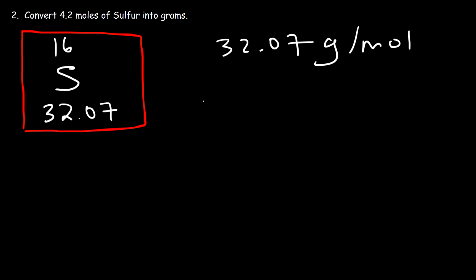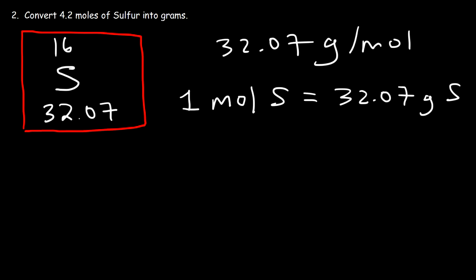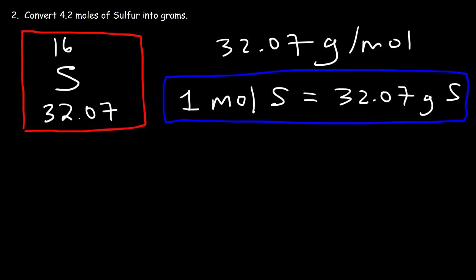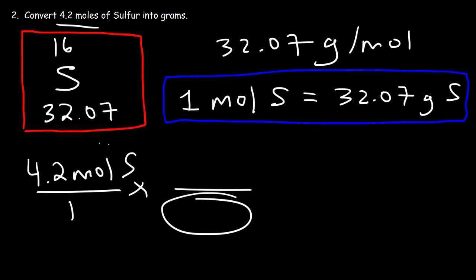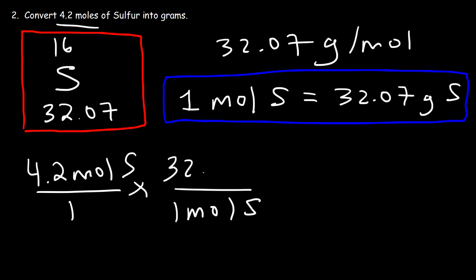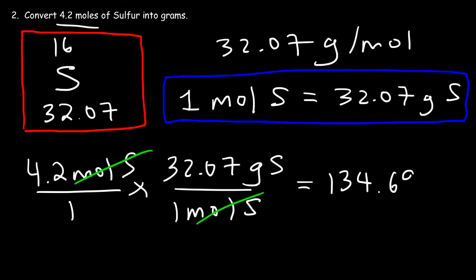Now we need to write our conversion factor: one mole of sulfur has a mass of 32.07 grams. Start with what we're given: 4.2 moles of sulfur. In the next fraction, we put moles on the bottom so it cancels with the moles on the top left — 1 mole of sulfur equals 32.07 grams of sulfur. These units cancel, leaving grams of sulfur. So 4.2 times 32.07 equals 134.694 grams of sulfur.